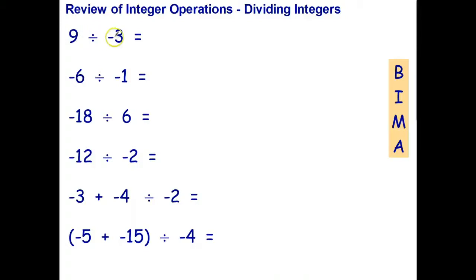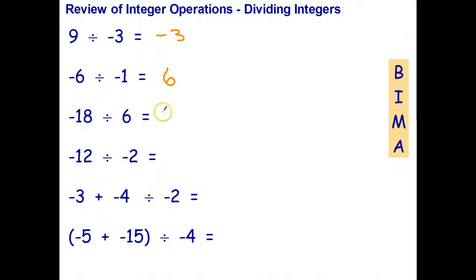Nine divided by negative three: positive divided by a negative is a negative. Negative six divided by negative one: a negative divided by a negative — signs are the same — the answer is positive six. Negative divided by a positive is a negative. Negative divided by a negative is a positive — signs are the same. For this one we've got to do the division before the addition.